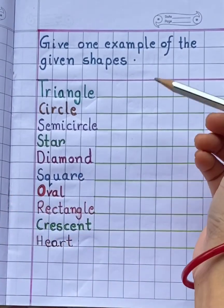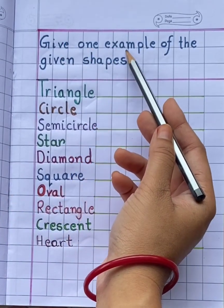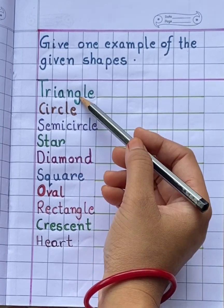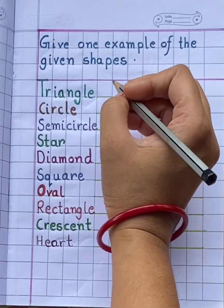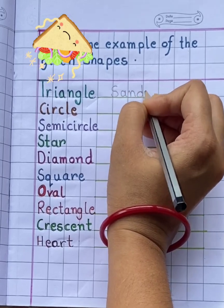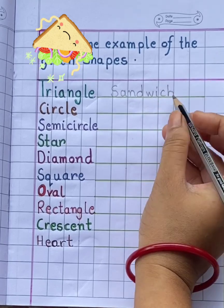Now children, let's do a small worksheet. Give one example of the given shapes. First shape is triangle. Example of triangle is sandwich. S-A-N-D-W-I-C-H.